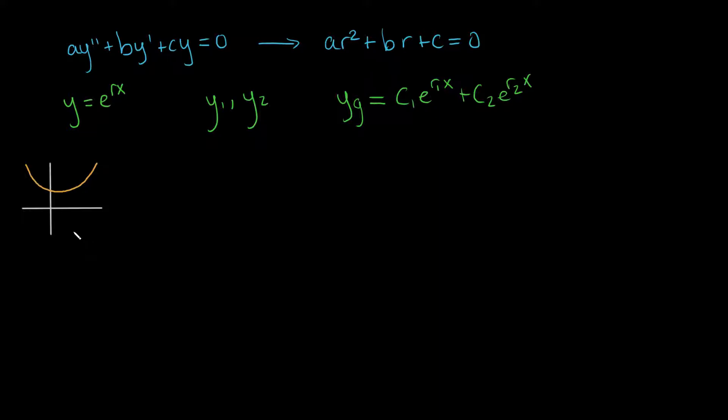So what does that look like? What it looks like is that r1 is equal to some real component, which we can call alpha, plus i times some complex component. And just thinking back to what the quadratic equation actually has, this is a plus or minus, so this is the plus case. And then the minus case is r2 is the same real component, but then minus i times the same imaginary component.